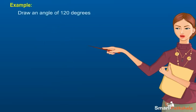Example: draw an angle of 120 degrees. Explanation Step 1: Draw a ray OA with endpoint O.